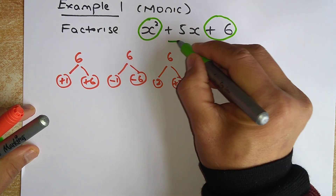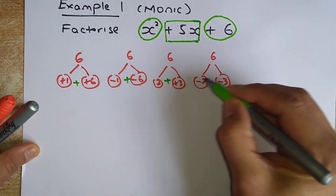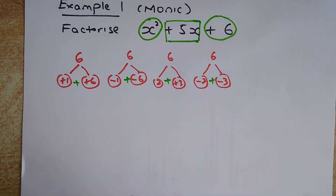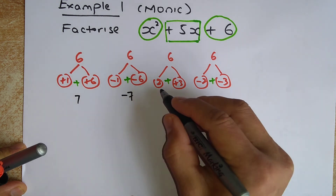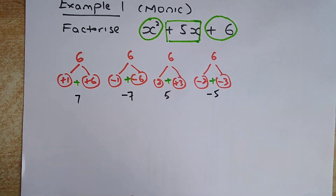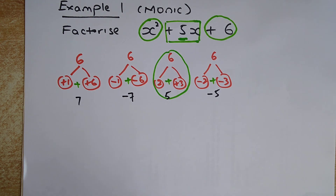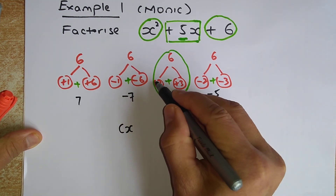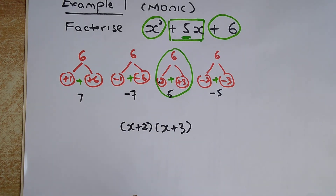The next step is to find the factor pair that adds up to the middle number, plus 5x. So: 1 plus 6 gives 7; minus 1 plus minus 6 gives minus 7; 2 plus 3 gives 5; and minus 2 plus minus 3 gives minus 5. The one that matches the middle term is 5, so we use plus 2 and plus 3. That gives us the factorized form: x plus 2 times x plus 3.